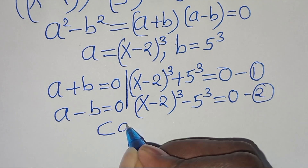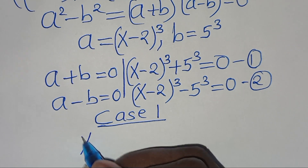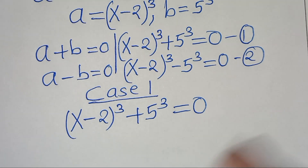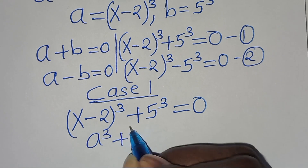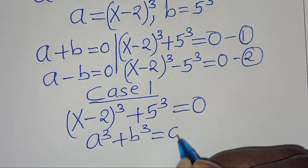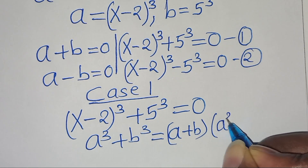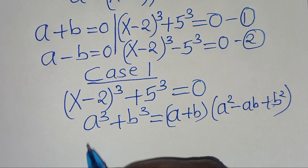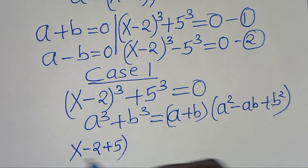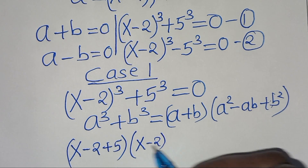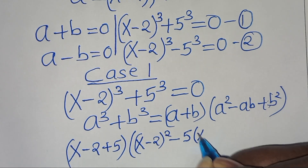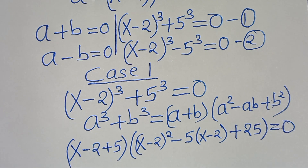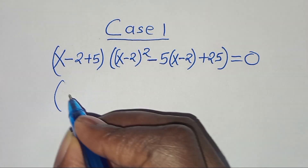In Case 1, we have (x minus 2)^3 plus 5^3 equals 0. This is a sum of two cubes in the form a^3 plus b^3, which factors as (a plus b)(a squared minus ab plus b squared). Applying this identity, we get (x minus 2 plus 5) times [(x minus 2)^2 minus 5(x minus 2) plus 25] equals 0, so (x plus 3) times that expression equals 0.